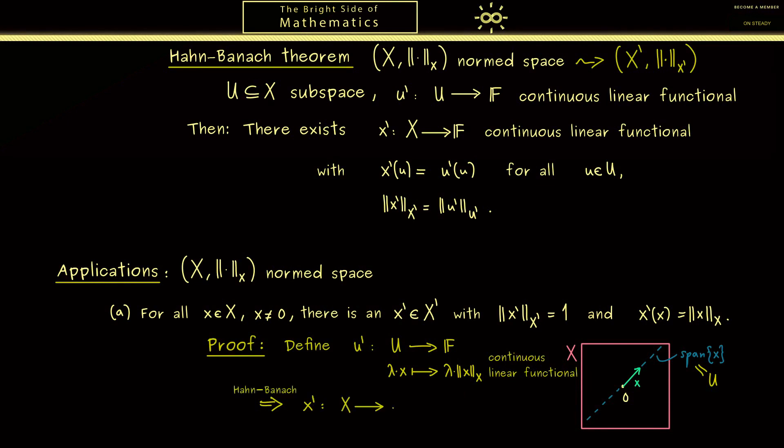It's defined on the whole space X so it's an element in X'. Now if we put in the point x in the functional it's the same as putting it into u' because x lies in U. Now looking back to the definition of u' we see what should come out is just the norm of x.